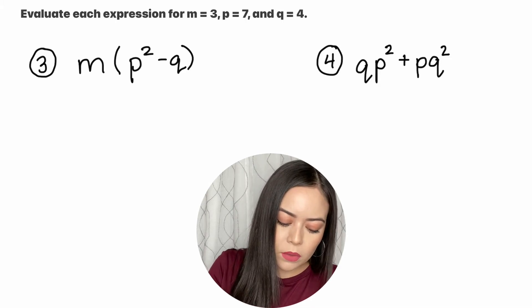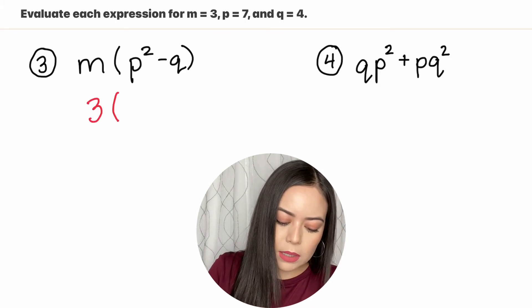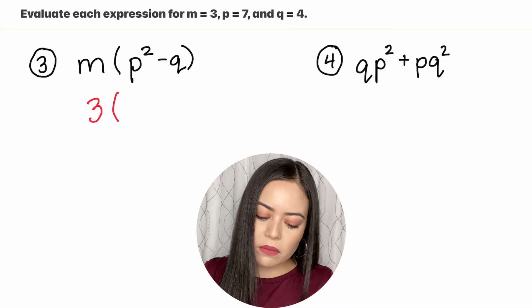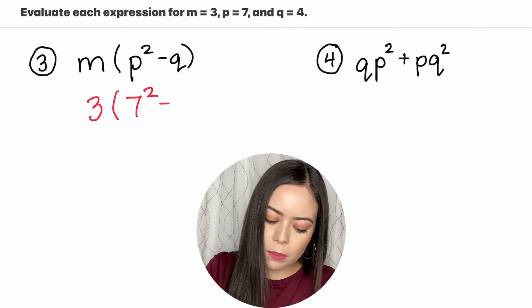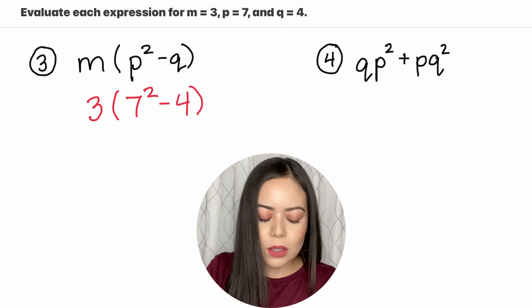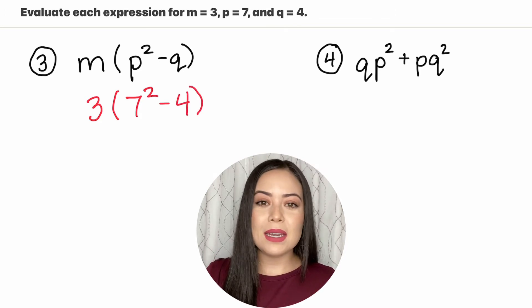So looking at 3 we have m or 3 times p squared. So our p value is 7, so we're going to say 7 squared minus q or minus 4 and then close the parentheses. And again we're going to use our order of operations to simplify.